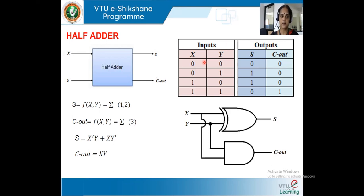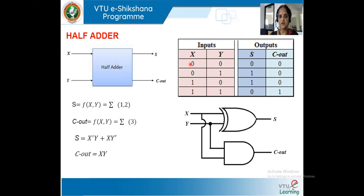When designing any combinational logic circuit, we first write a statement defining the relationship between output and input. We have inputs X and Y and outputs sum and carry. Sum gives the sum of the two numbers, and carry is generated depending on the inputs. Step three is to write the equations based on the truth table.